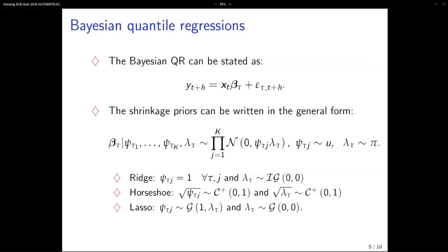In contrast, we have the horseshoe prior, which doesn't require the user to elicit any hyperparameters. We have half-Cauchy distributions for both terms, consistent with a sparse representation — meaning we get rid of most predictors. Because the horseshoe prior has fat tails and a spike at zero, it leaves only a few strong predictors. The lasso prior is the most flexible one, sitting between sparse and dense representation, allowing for the richest shrinkage patterns.